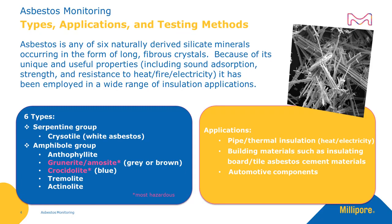The six types of asbestos fall into two groups. The serpentine group, containing chrysotile, or white asbestos. The amphibole group, containing anthophyllite, gunnerite, or amicite, which is brown asbestos, crocodylite, or blue asbestos, tremolite, and actinolite.